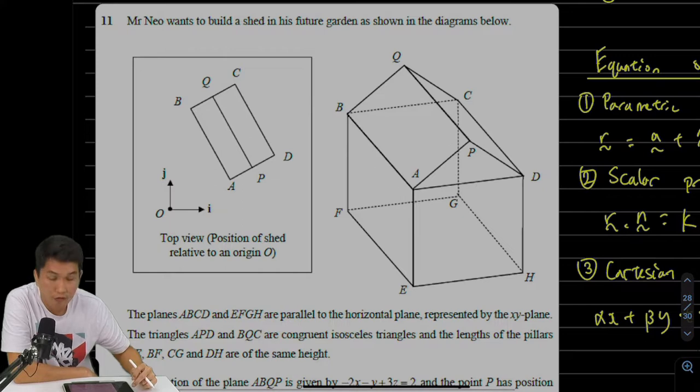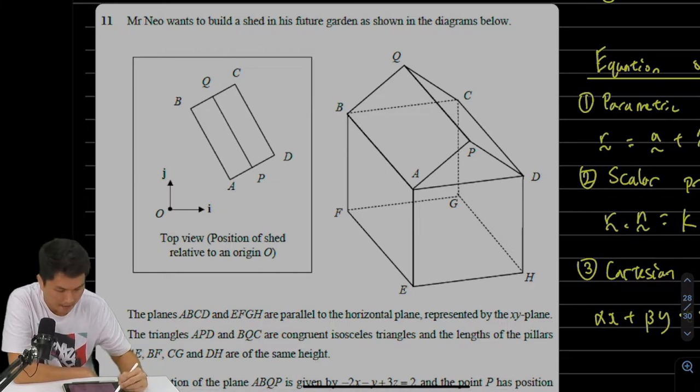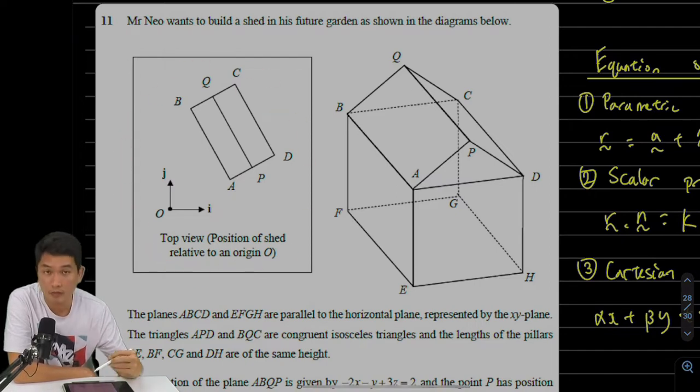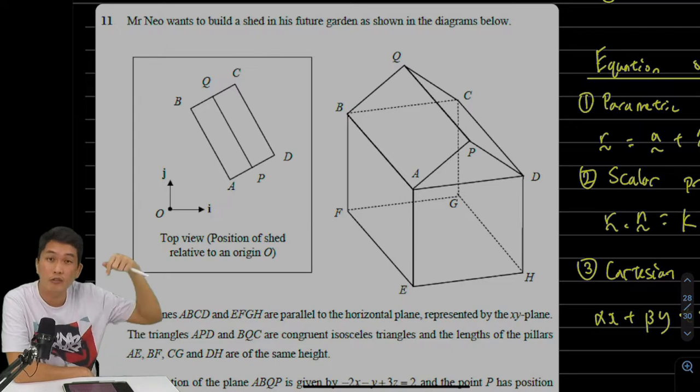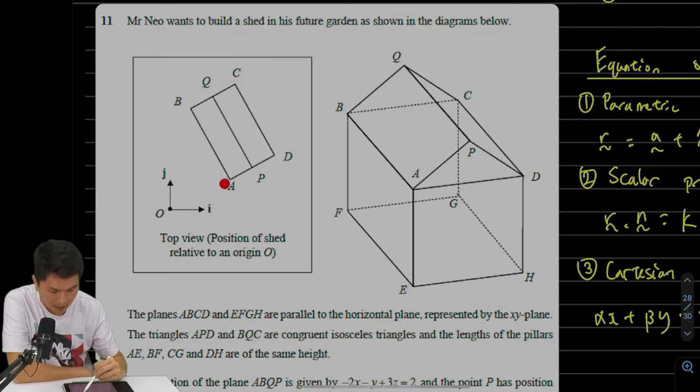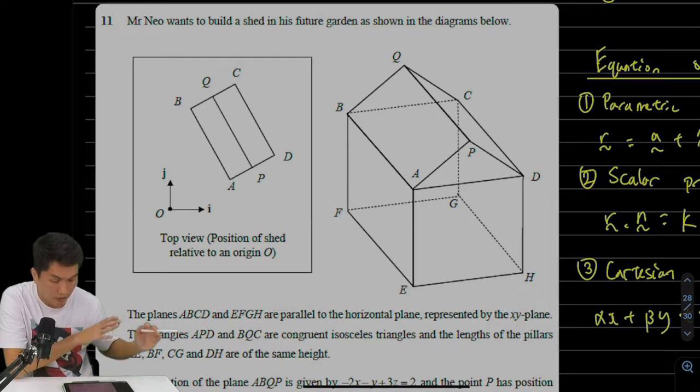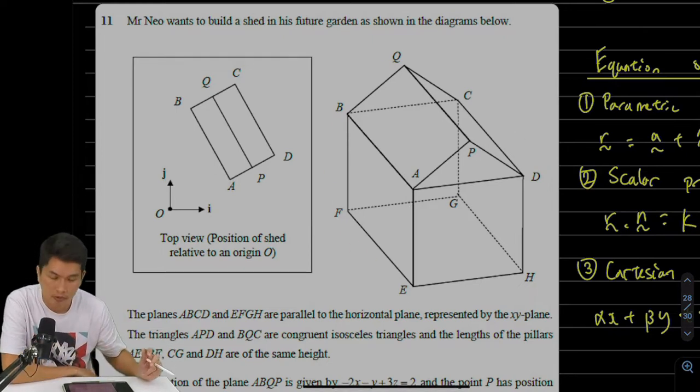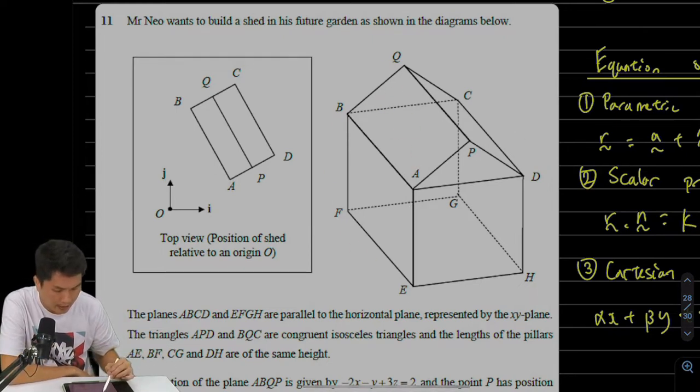The question says that Mr. Neo wants to build a shed in his garden, and they give you two diagrams. This over here is the bird's eye view—if you're a bird flying across the garden and look down directly, the shed looks like this. We also have a perspective view, a 3D shape of the shed. It has a slanted roof on the left, slanted roof on the right. The base area is rectangular, as we can tell from the bird's eye view.